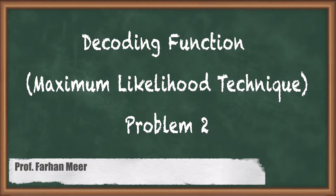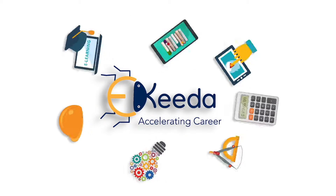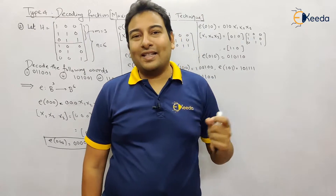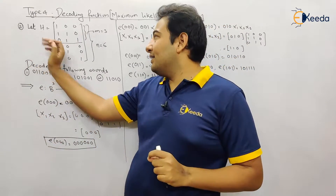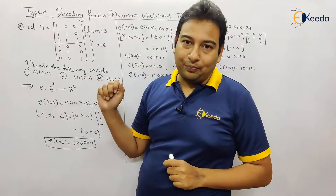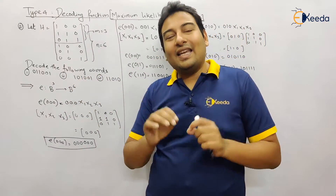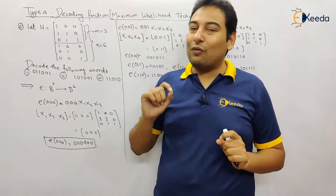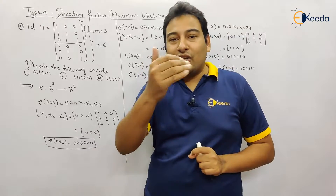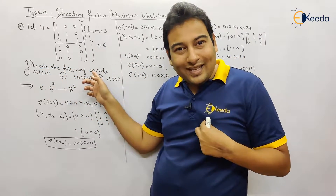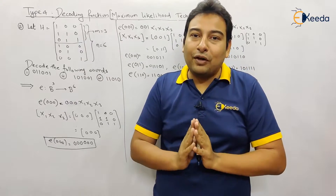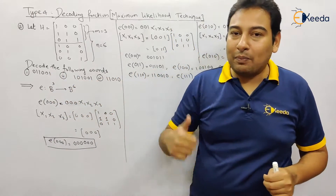Hello friends, in this video we'll be discussing problem number two on decoding function, that is maximum likelihood technique. Let us discuss problem number two of maximum likelihood technique. Here, h is given to us and we need to decode the following words. The difference between problem one and problem two is that in problem one, the encoding function was already given to us. But here, the encoding function is not given to us, so we need to apply type number three to first find the encoding function, and once we get that, we can decode the sequence.